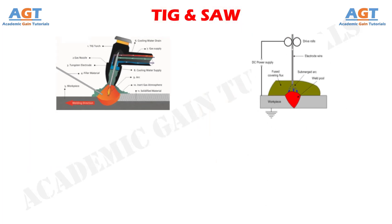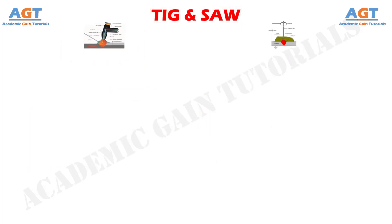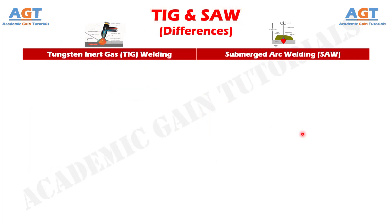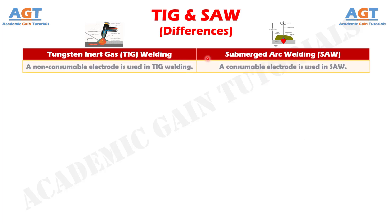Let's look into the basic differences between TIG welding and submerged arc welding in tabular form. Difference number 1: a non-consumable electrode is used in TIG welding, whereas a consumable electrode is used in submerged arc welding.